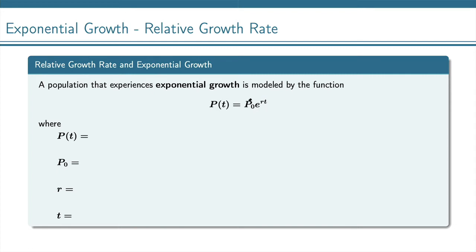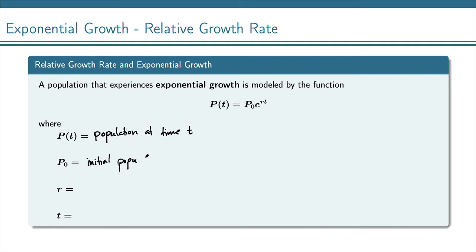So this is our formula with p₀ as the initial population size and r as the relative growth rate. p(t) is the population at time t, p₀ is the initial population, r is the relative growth rate — it may be stated as a percentage, but you always need to have it in decimal form — and t is time.